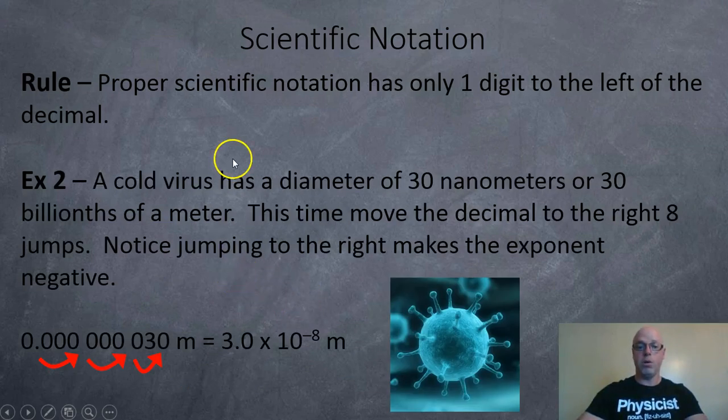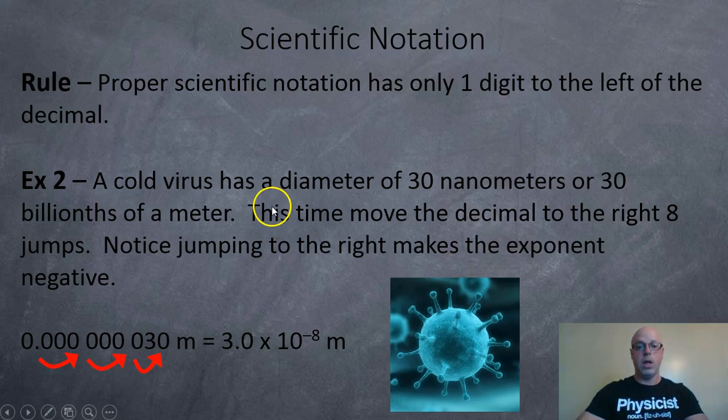And here's an example where we do the opposite, go the opposite direction. Here we've got a cold virus, the common cold, the rhinovirus, makes everyone sick. So the cold virus has a diameter of 30 nanometers, or 30 billionths of a meter.